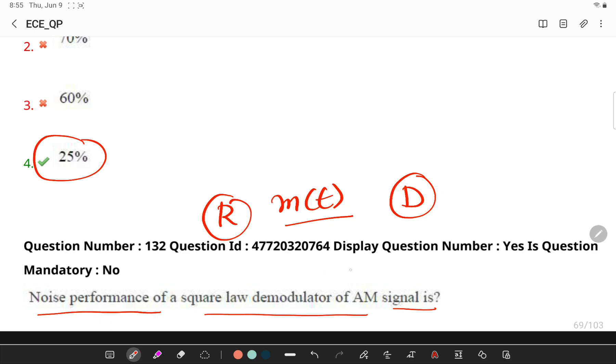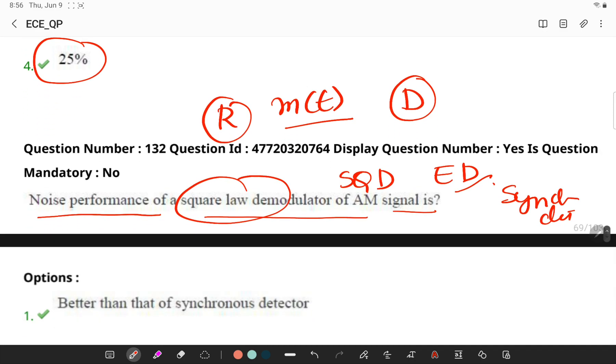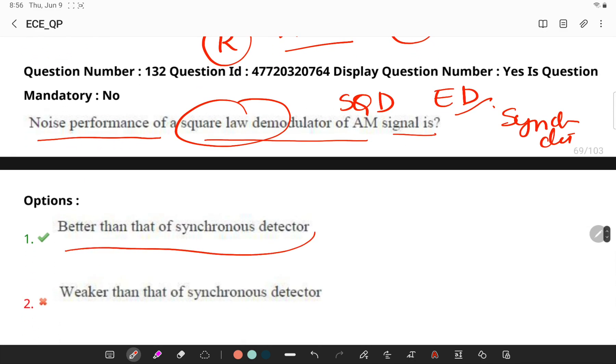So we have square law demodulator and envelope demodulator for AM. Noise performance of a square law demodulator is always far better than your synchronous detector. So it is better than that of a synchronous detector.